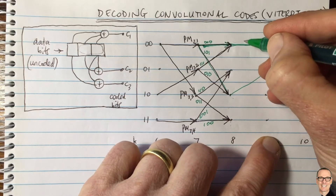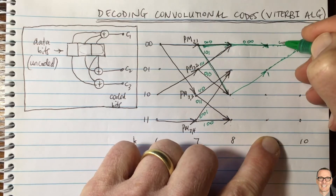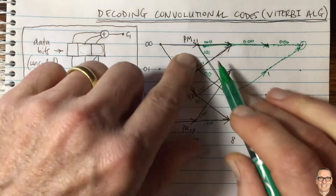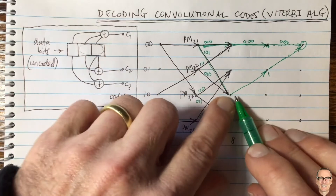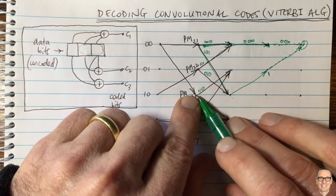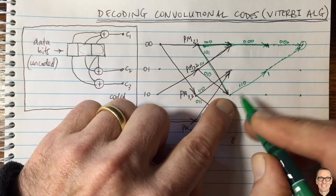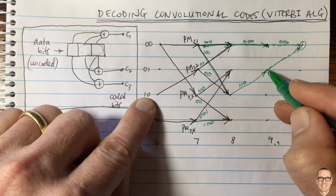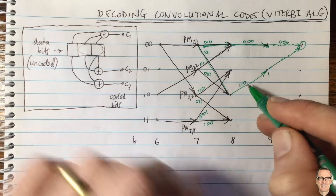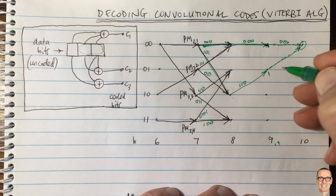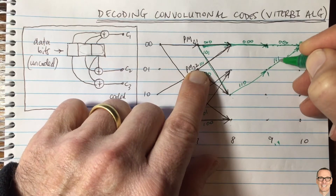Looking at the outputs along the branches: the transition corresponding to state 00 to 00 gives 000; from 00 to 10 gives 101; the transition going to the 00 state from 01 gives 110; and the branch going from 01 to 10 gives 111. These are the coded bit sequences expected at the receiver for each branch.